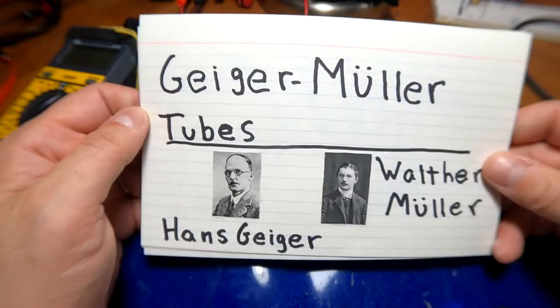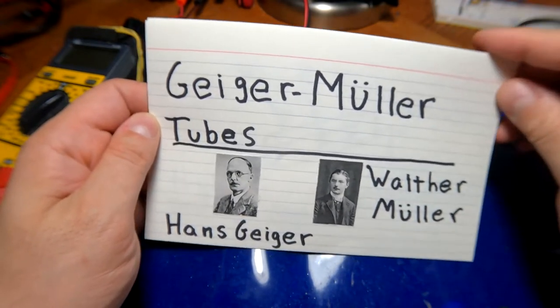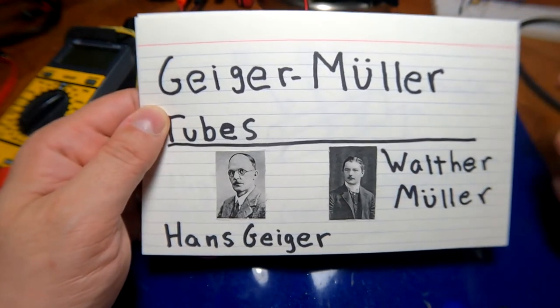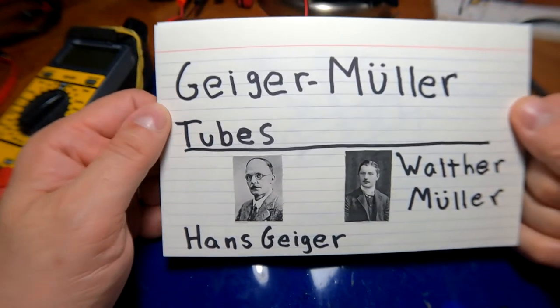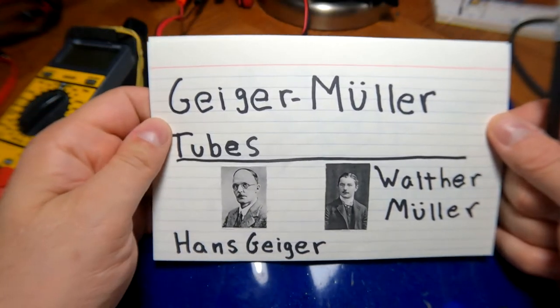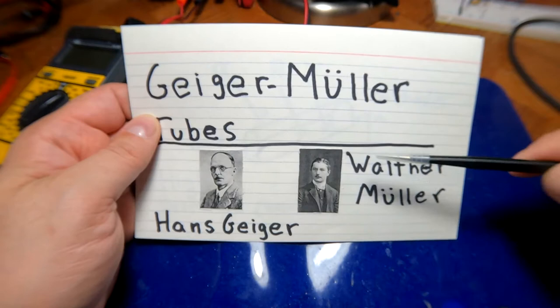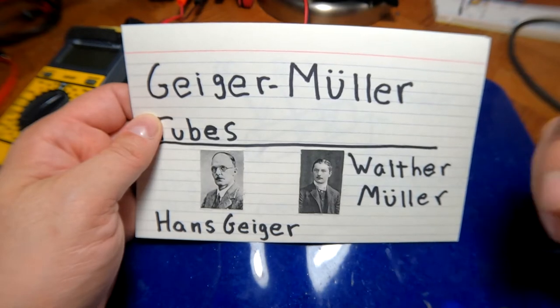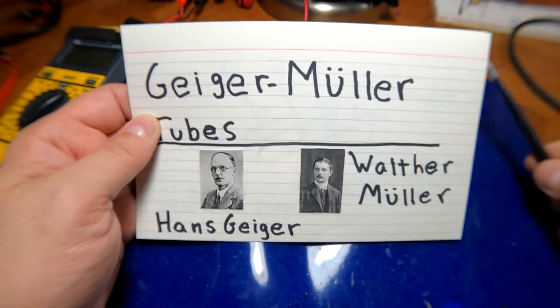So Geiger counters are actually named after a specific man, Hans Geiger, who created the first Geiger tube. Now, he didn't create it in the sense of trying to create a radiation sensor. It was sort of like something that came out of other experiments. And they were learning about how radioactivity interacts with various gases and so forth. A man named Walter Mueller, who was a PhD student of Hans Geiger, helped him to refine and perfect the design of what we now know as the Geiger-Mueller tube. Most people just call it a Geiger tube, but the technical term is a Geiger-Mueller tube because they kind of designed it together.